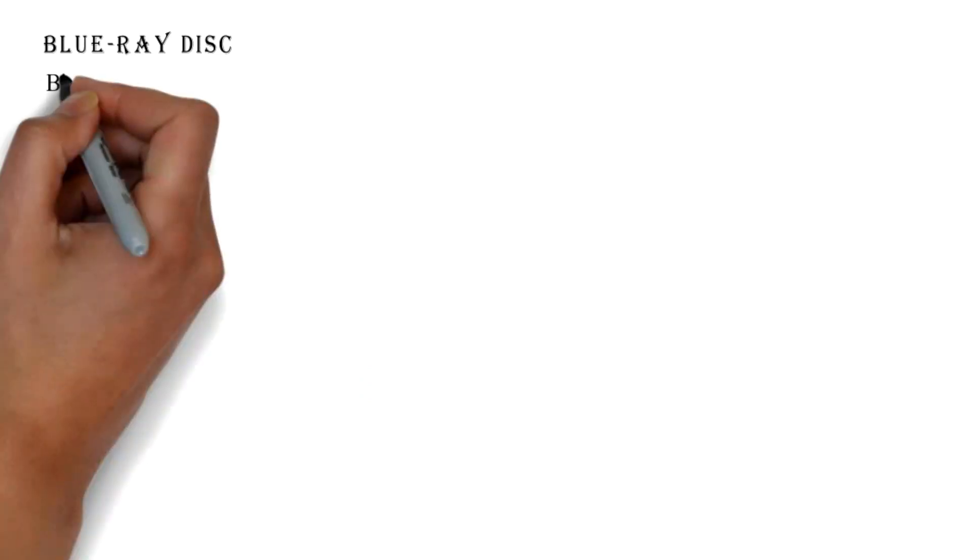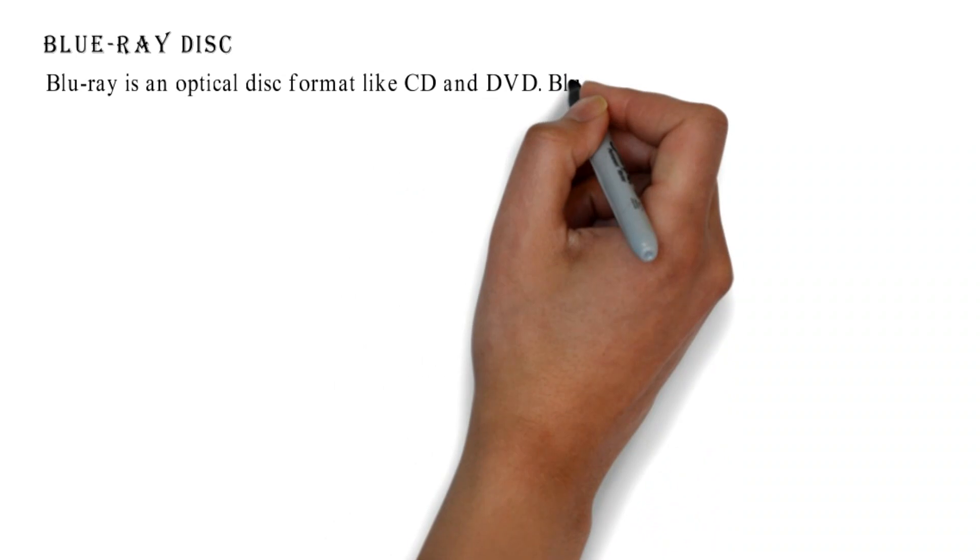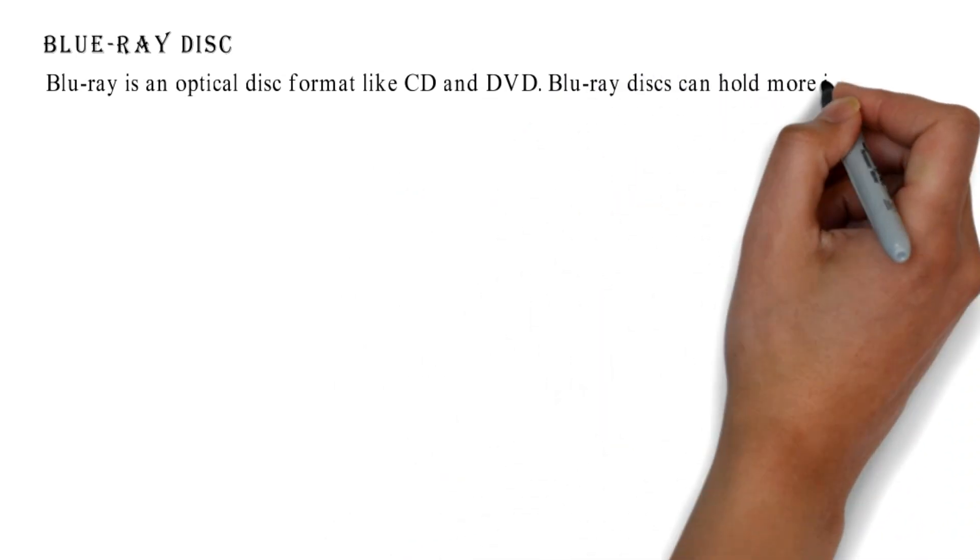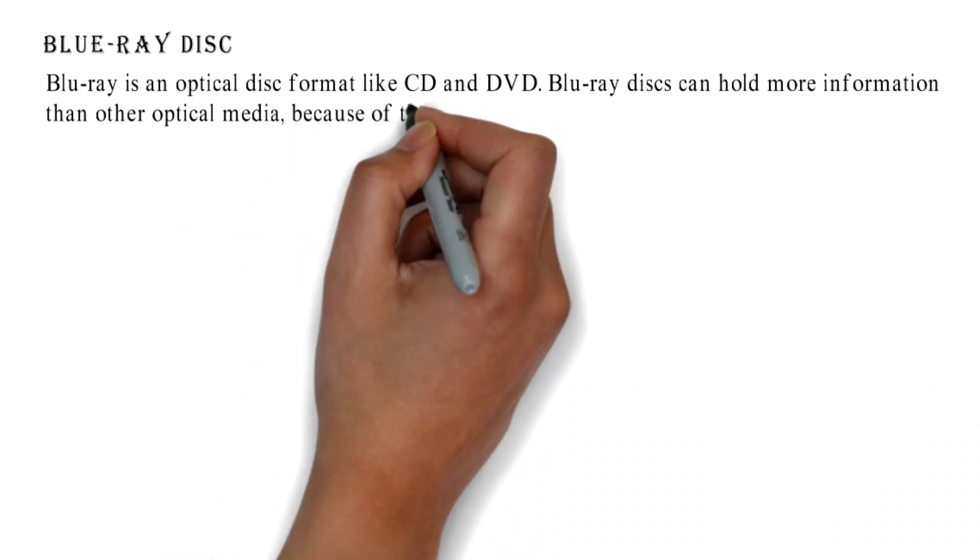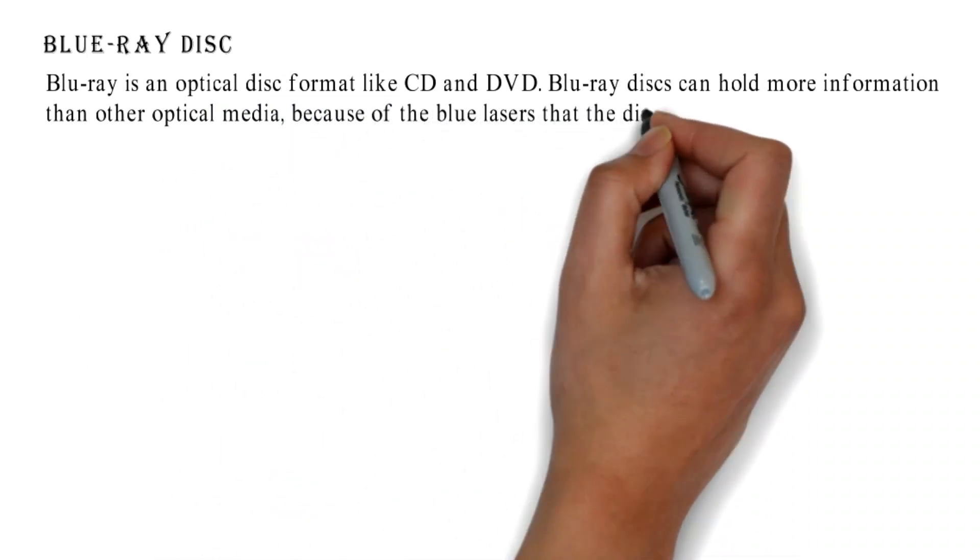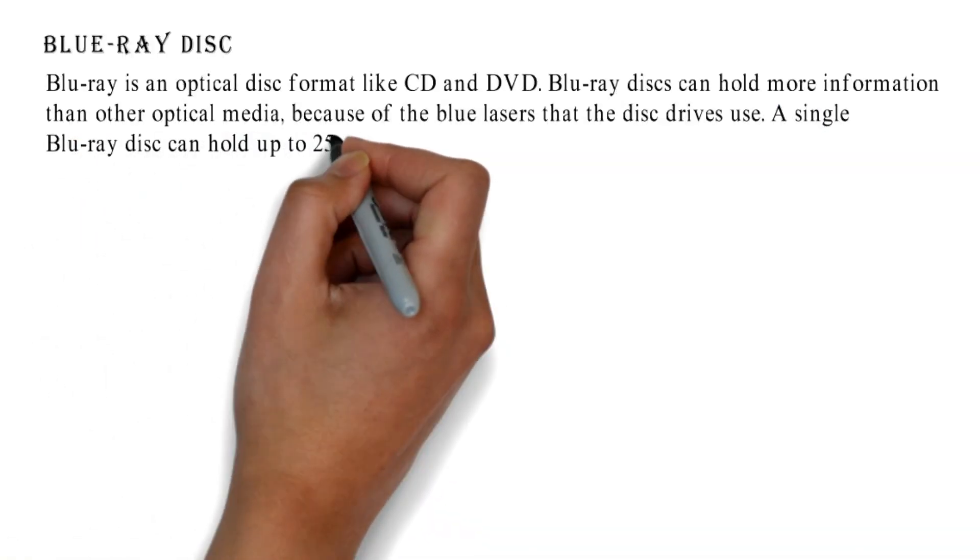Blu-ray disk: Blu-ray is an optical disk format like CD and DVD. Blu-ray disks can hold more information than other optical media because of the blue lasers that the disk drives use. A single Blu-ray disk can hold up to 25GB of data.